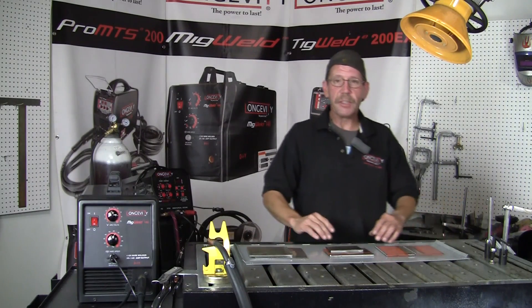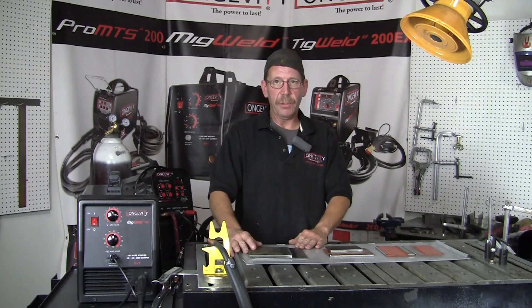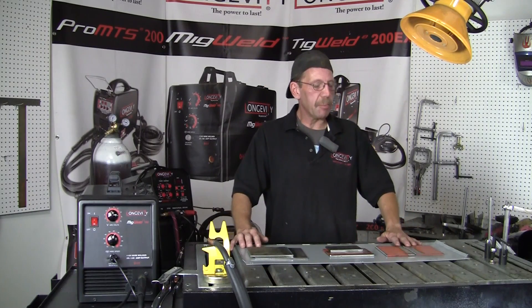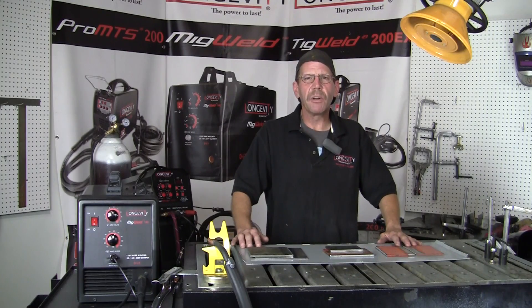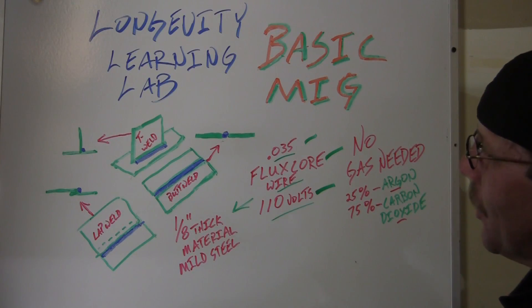Two pieces like that, then a T weld or fillet weld, or lap weld. This little machine is hot enough - quarter inch mild steel is about the extreme. I wouldn't go much thicker than that. We'd have to go up more amperage. We're going to do three kinds of basic welds: the lap weld, the T weld, and the butt weld.